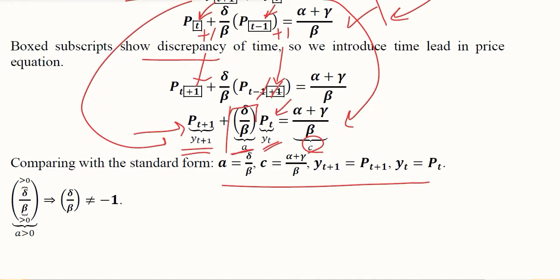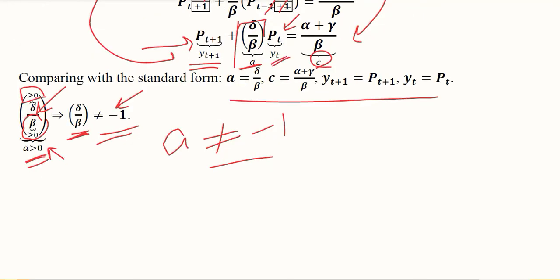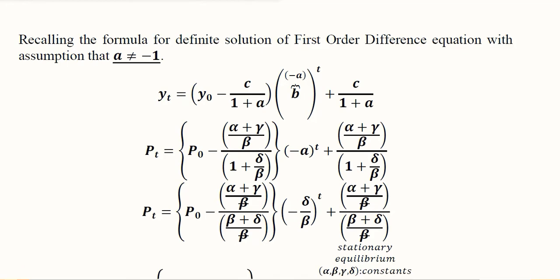Since a equals delta over beta, we consider the sign of delta. It is well established that alpha, beta, gamma, and delta are all positive values. When two positive values are divided, they give a positive number — whether a decimal or a small fraction, it will still be positive. Therefore, a cannot be equal to minus 1, which is a negative value. So in this case, a is definitely not equal to minus 1.